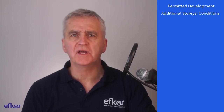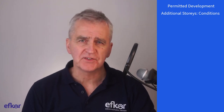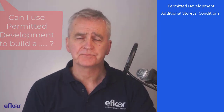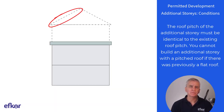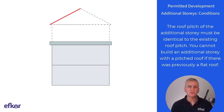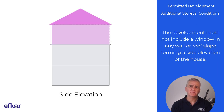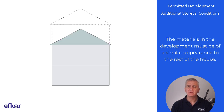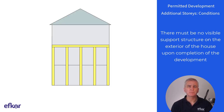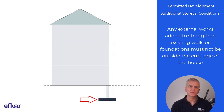We're about three quarters of the way through this video, and if you're finding it useful, I'd appreciate you clicking on the thumbs up or subscribe buttons below. Please don't hesitate to ask a question or make a suggestion in the comments. The roof pitch of the additional story must be identical to the existing roof pitch. You cannot build an additional story with a pitched roof if there was previously a flat roof. The development must not include a window in any wall or roof slope forming a side elevation of the house. The materials in the development must be of a similar appearance to the rest of the house. There must be no visible support structure on the exterior of the house upon completion of the development. Any external works added to strengthen existing walls or foundations must not be outside the curtilage of the house.